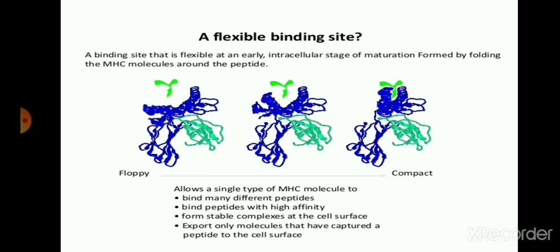Because the MHC molecule functions as a representer of antigen towards the T cytotoxic cell, it allows a single type of MHC molecule to bind many different peptides. Due to their flexibility, a single MHC molecule can bind different kinds of peptides secreted by the organism's cells or antigen. Another feature is that MHC molecules show great affinity towards binding peptides with high affinity, forming a more stable complex at the cell surface. The MHC molecule only exports molecules that have captured a peptide to the cell surface.